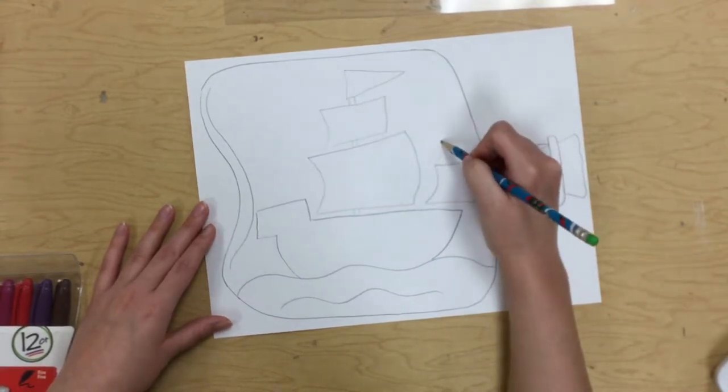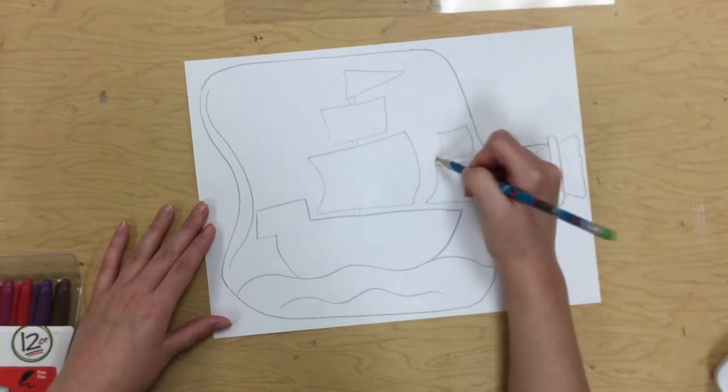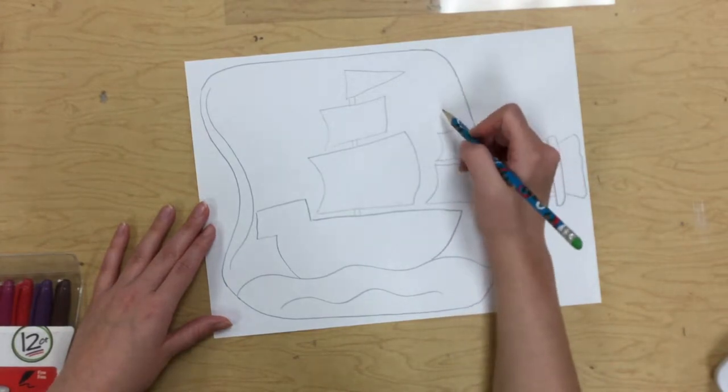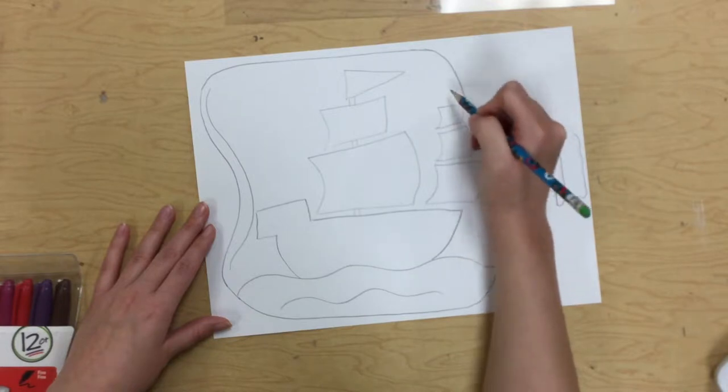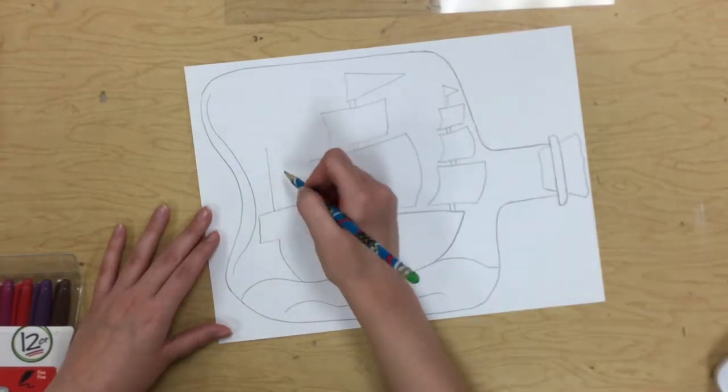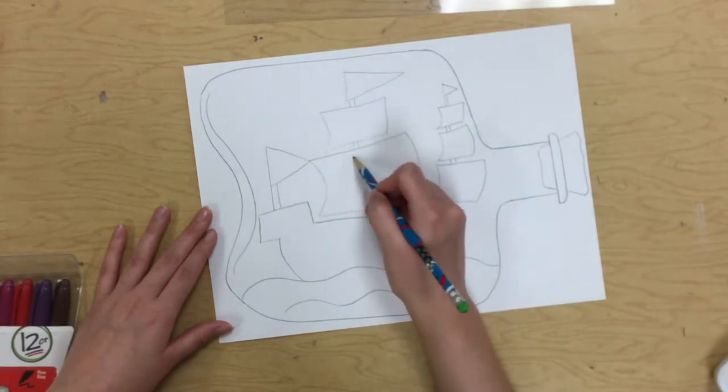Now to kind of make the flags look like they're blowing in the imaginary breeze that's in this bottle, I kind of curve the lines. That's how you can make them look like they're blowing. So now I'm going to add my skull and crossbones.